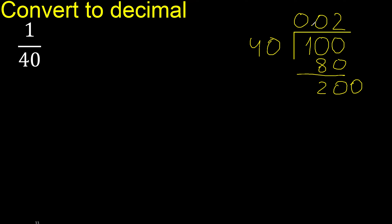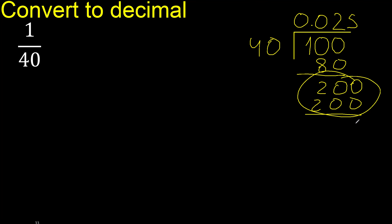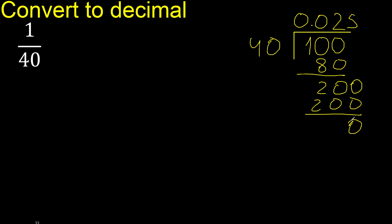The point is here. 40 multiplied by what number is nearest to 100? 5. 40 multiplied by 5 is 200. Subtract is 0, therefore finish.